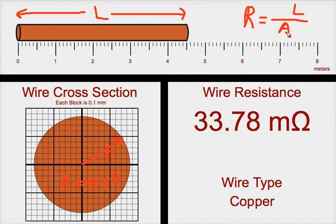So area goes in the denominator — bigger areas give you less resistance.